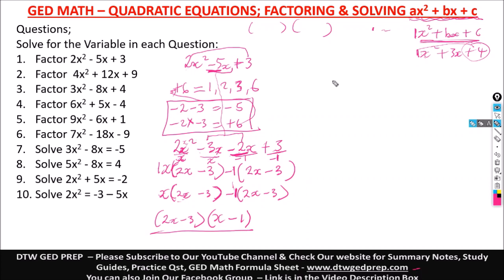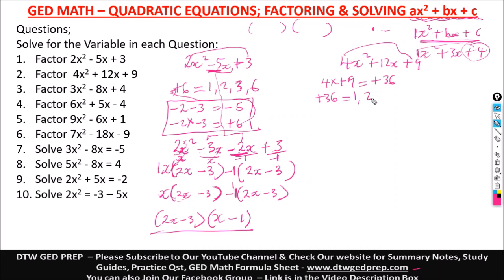Number 2 says 4x squared plus 12x plus 9. First step: multiply 4 times positive 9, which gives positive 36. Let's look for the factors of positive 36: 1, 2, 3, 4, 6, 9, 12, 18, and 36. We need two numbers that when added or subtracted give us positive 12, and when multiplied give 36.